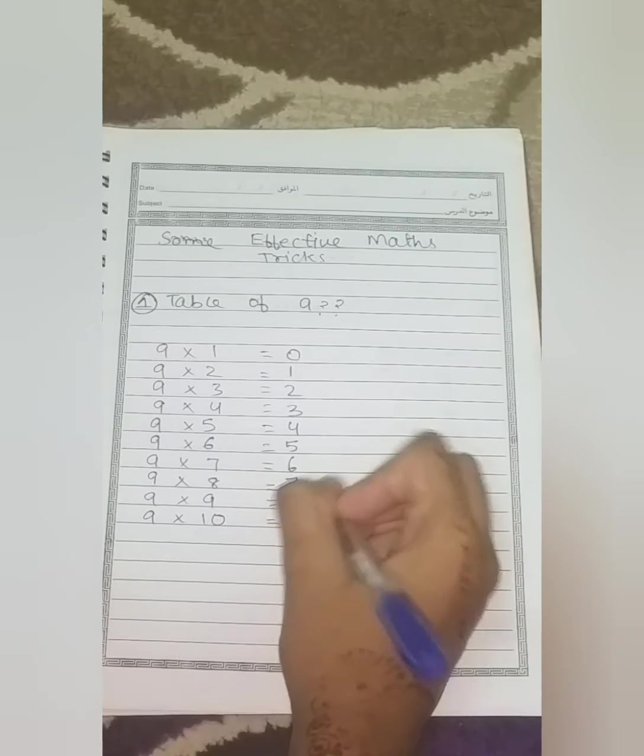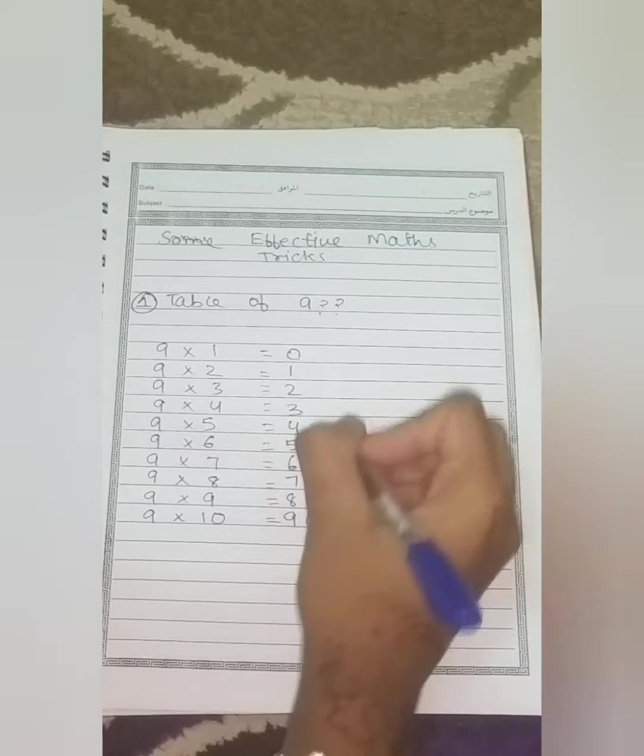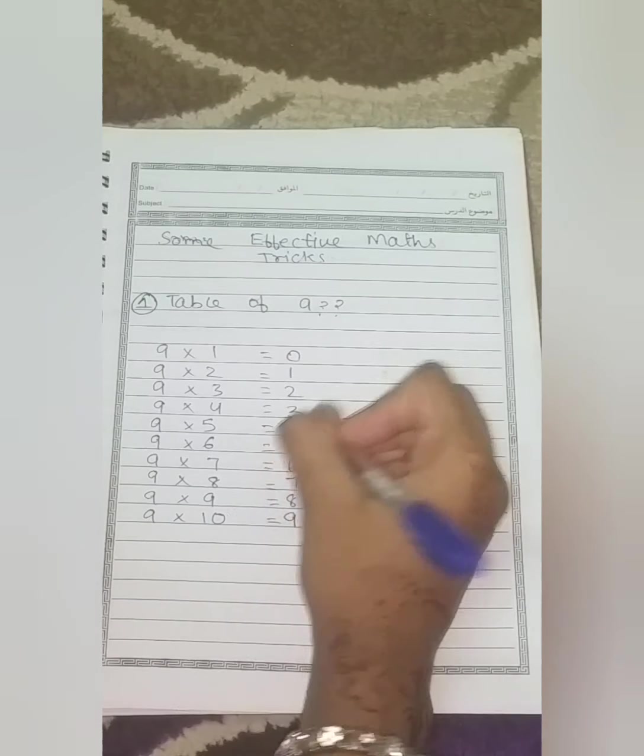Now, again, we will write, but from 0 to 9, we will make it in a reverse order. Something like this.